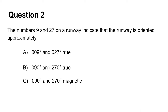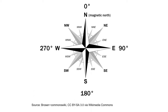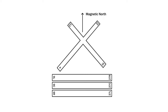The second question asks what the numbers 9 and 27 on a runway indicate in terms of geographical orientation. To understand what the numbers 9 and 27 mean, imagine a compass showing magnetic north at 0 degrees, east at 90 degrees, south at 180 degrees, and west at 270 degrees. The runway names are similarly named by a number between 1 and 36, which shows the direction of the runway's heading relative to magnetic north.